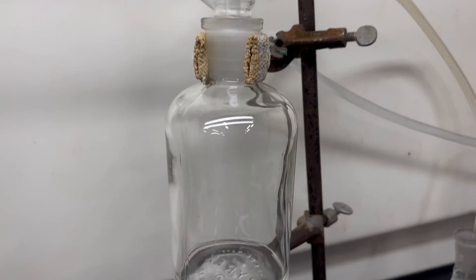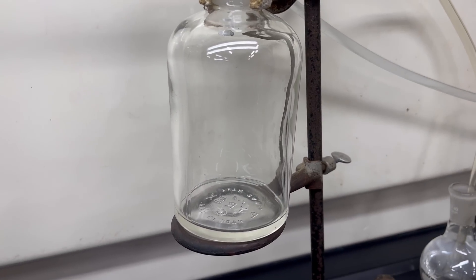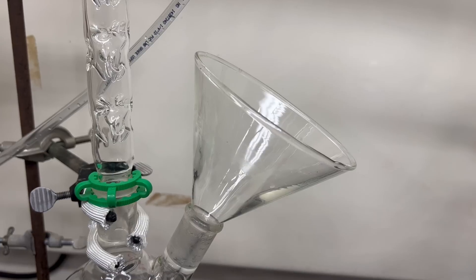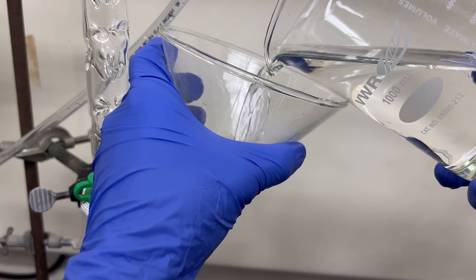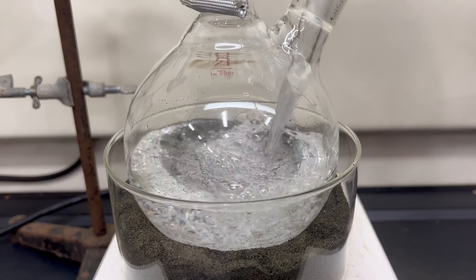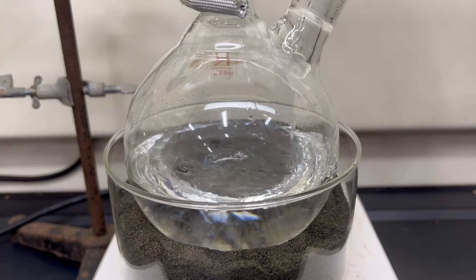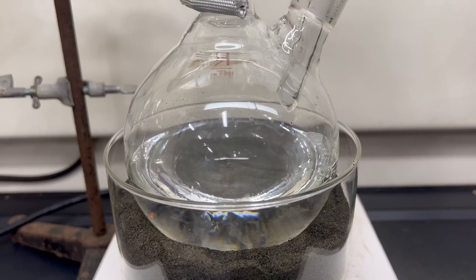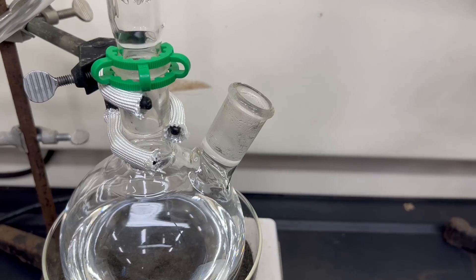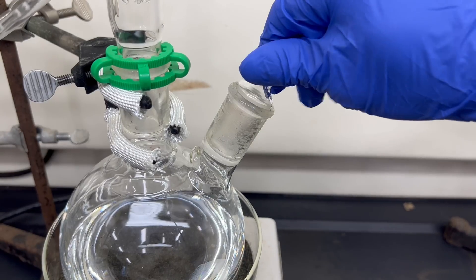After the condenser is the collection bottle. We now add the unknown carbon tetrachloride, hopefully, to the boiling flask. And then stopper the whole thing up.